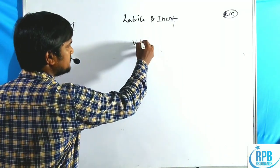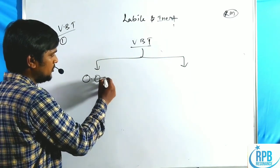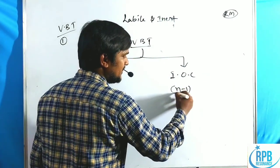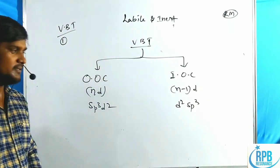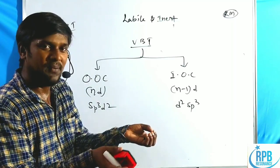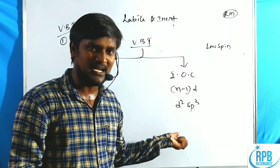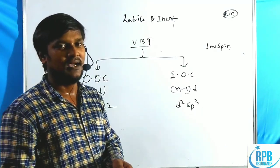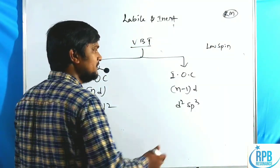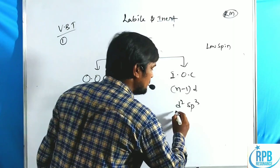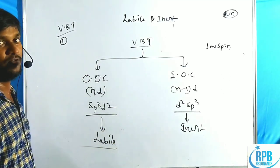According to VBT, complexes are classified into two types: outer orbital complexes and inner orbital complexes. Inner orbital means (n-1)d participation; outer means nd or ns participation, like sp3d2 or d2sp3 configuration. Whenever inner orbitals combine to form hybridization — meaning in the presence of low spin complexes — all electrons are paired up in the presence of strong field. So d2sp3 configurations are inert complexes. In the presence of sp3d2 configurations, those are labile complexes.